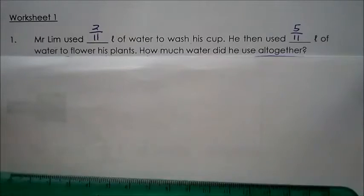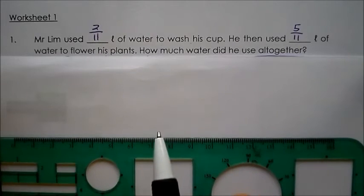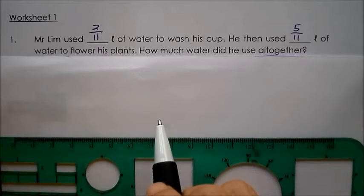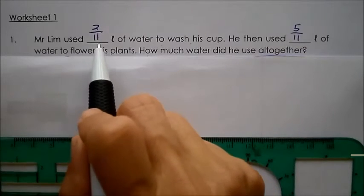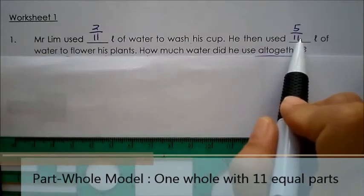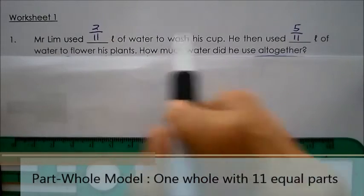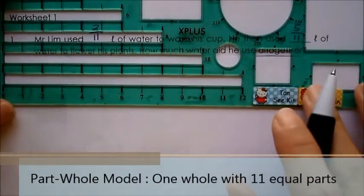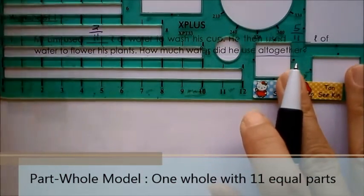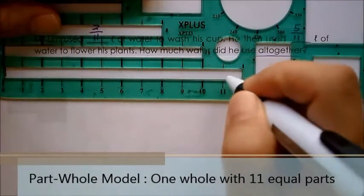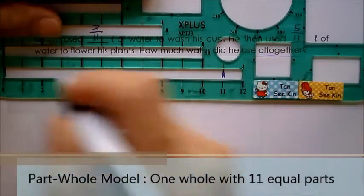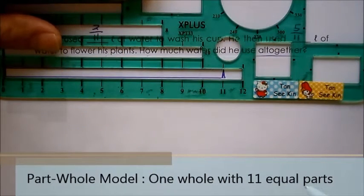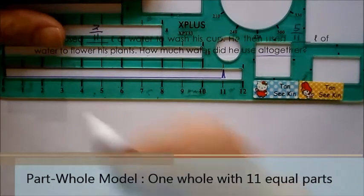I'm going to take my model stencil. I'm going to draw one whole which is how much water he had. And looking at the denominator, which is 11, I'm going to divide the one whole into 11 equal parts. So I'm going to draw a model and divide it into 11 equal parts.